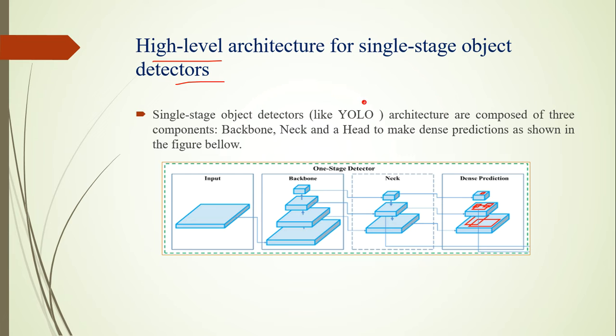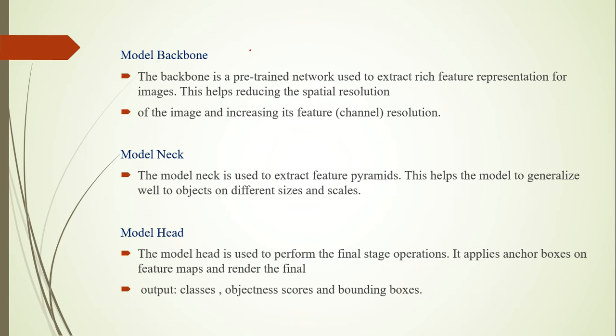These are composed of three components: backbone, neck, and head to make dense predictions. For some input image or video, it goes through the stage of backbone, then moves to the stage of neck, and then dense prediction. At last we can export the predicted output. Model backbone is a pre-trained network used to extract rich feature representation for images, reducing spatial resolution of the image and increasing feature resolution.